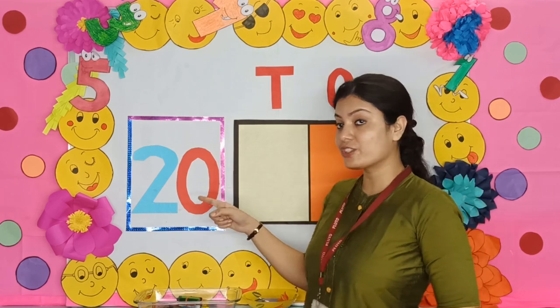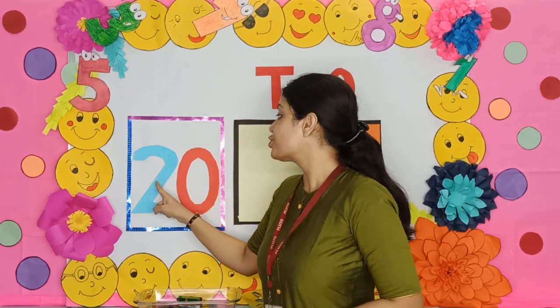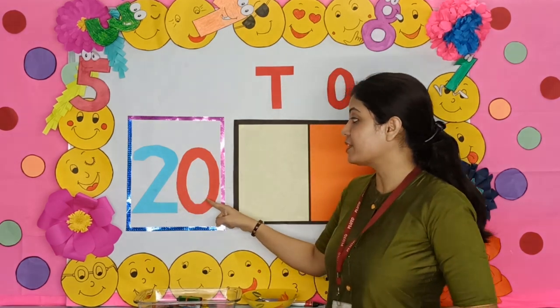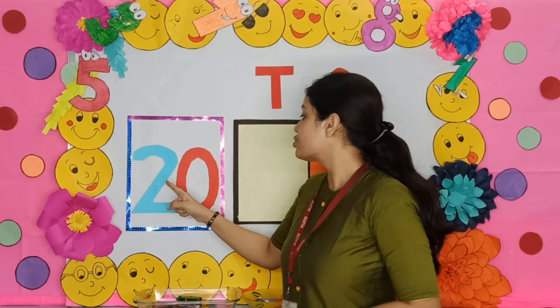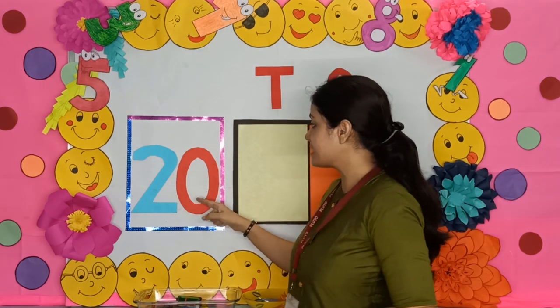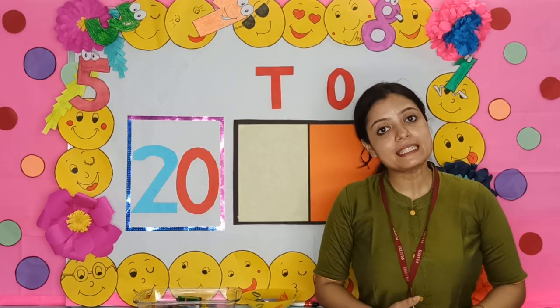Say with me: 20. Look here, children — 2, 0, 20. 2 and 0 makes the number 20.